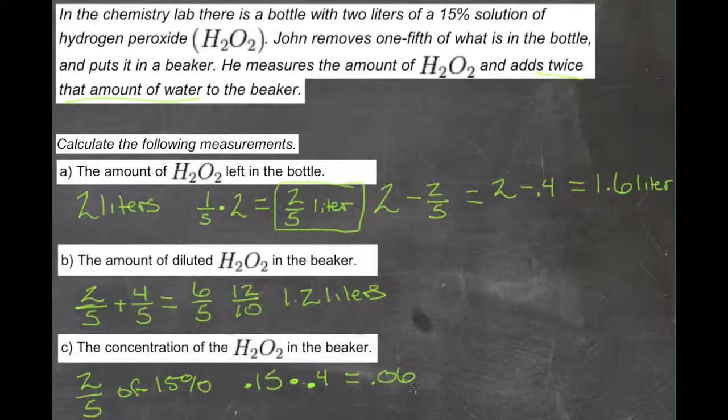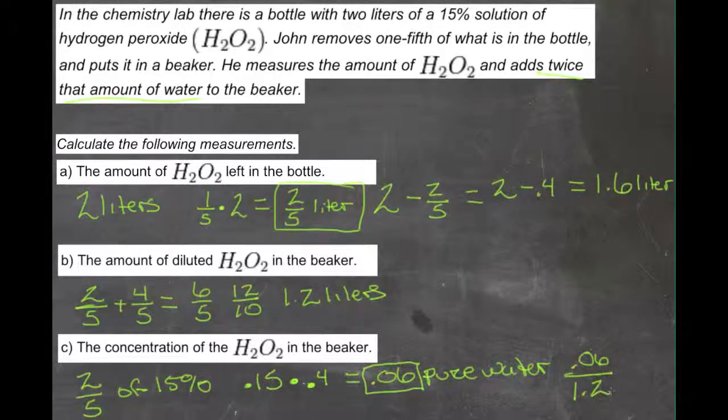After he adds the water, there's going to be 1.2 liters of solution in the beaker. So if 0.06 liters is the amount that's actually pure water, then we're going to have 0.06 out of 1.2 liters. That's going to be the percentage of pure water. That's 0.05 percent.